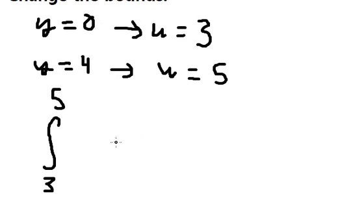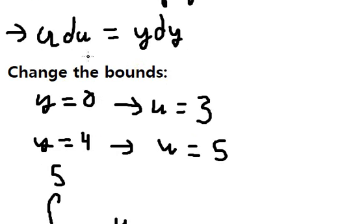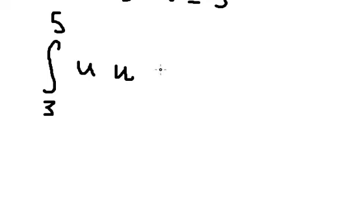We change to u, so we have u du. U times u gives us u squared. For the integral of u squared, we have the formula here.